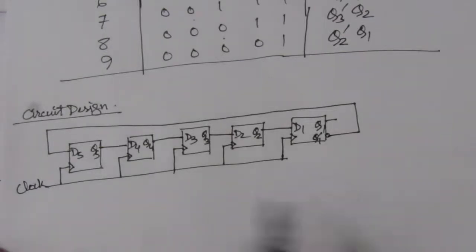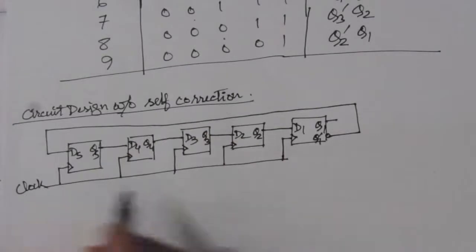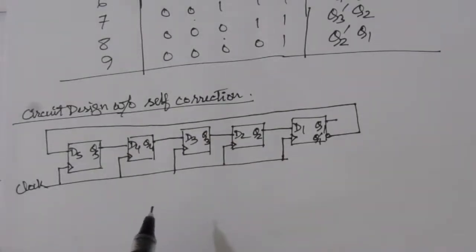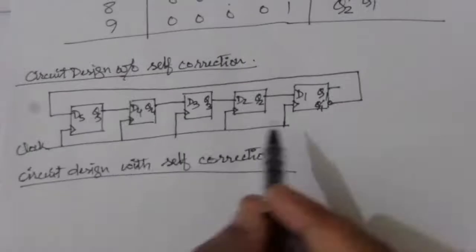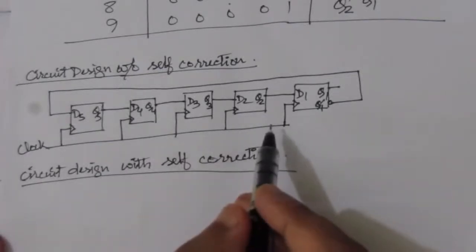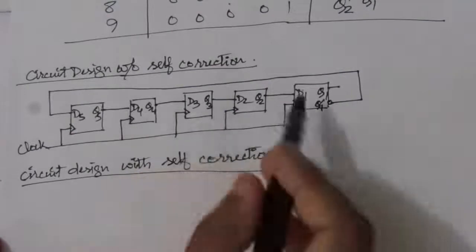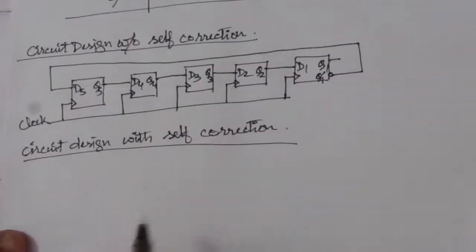This is the Johnson counter circuit with 5 flip-flops and 10 states without self-correction. To design the circuit with self-correction, we modify the third flip-flop input. From the previous problem, the equation is D3 = Q4 · (Q5 + Q3). All other parts of the circuit remain the same.